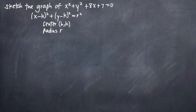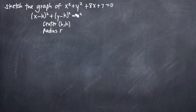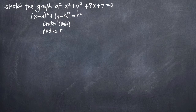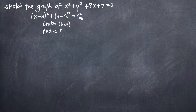In this particular problem, we've been asked to sketch the graph of x squared plus y squared plus 8x plus 7 equals 0. The standard form of a circle is the quantity x minus h squared plus the quantity y minus k squared equals r squared. This tells us that a circle in this form has its center at the coordinate point (h, k) and a radius of r.